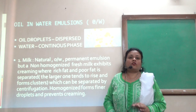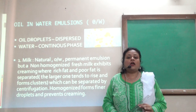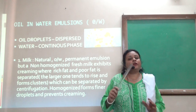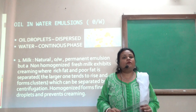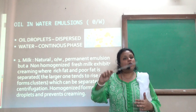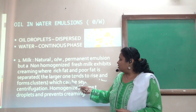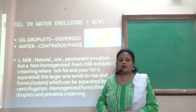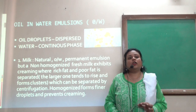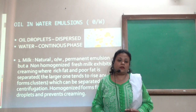When considering various kinds of milk, non-homogenized fresh milk exhibits creaming, dividing into two layers: a rich fat layer and a poor layer. The lighter particles move upward and heavier ones downward, forming clusters that can be separated by centrifugation. Homogenized milk forms finer droplets and prevents creaming.